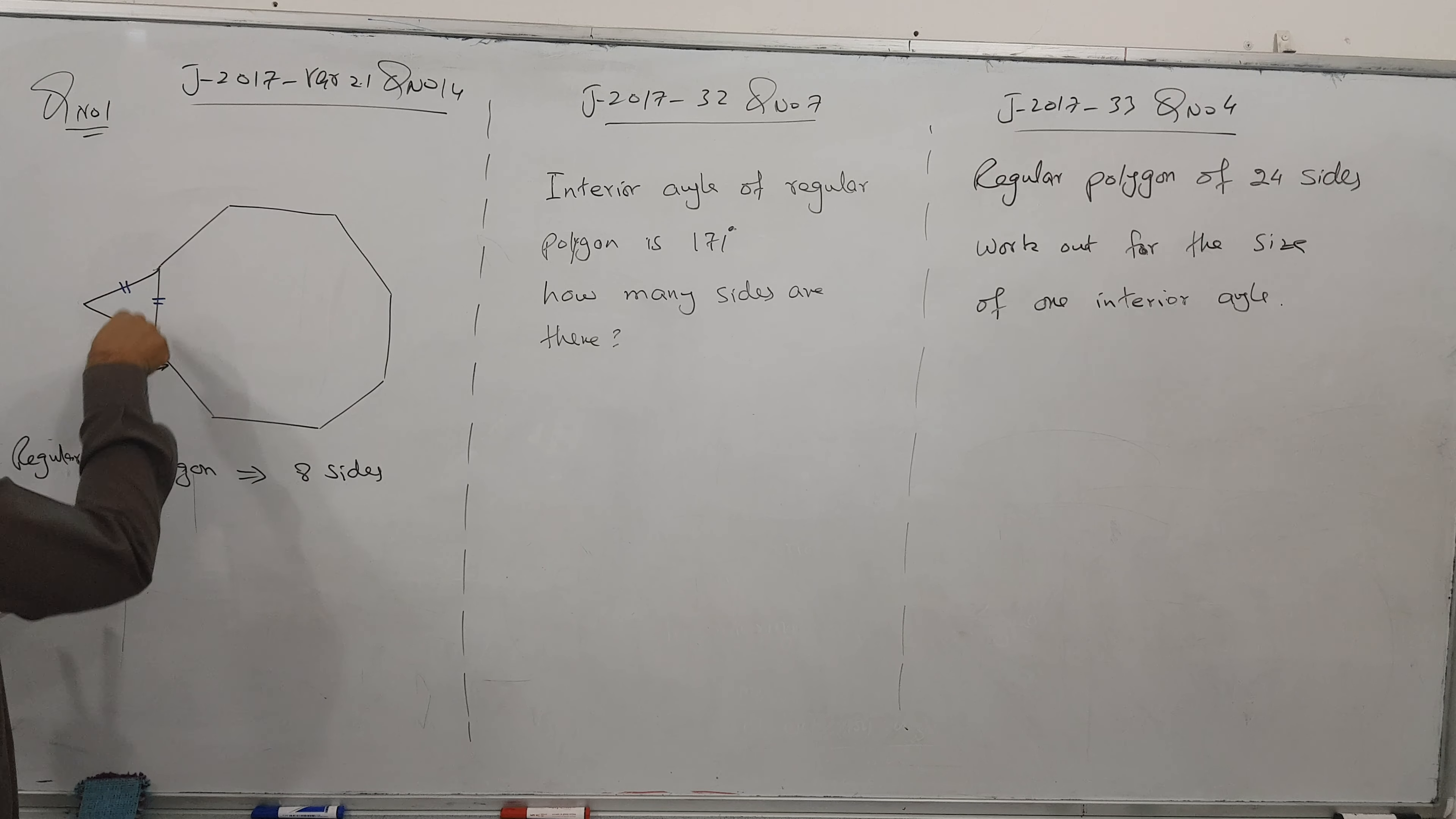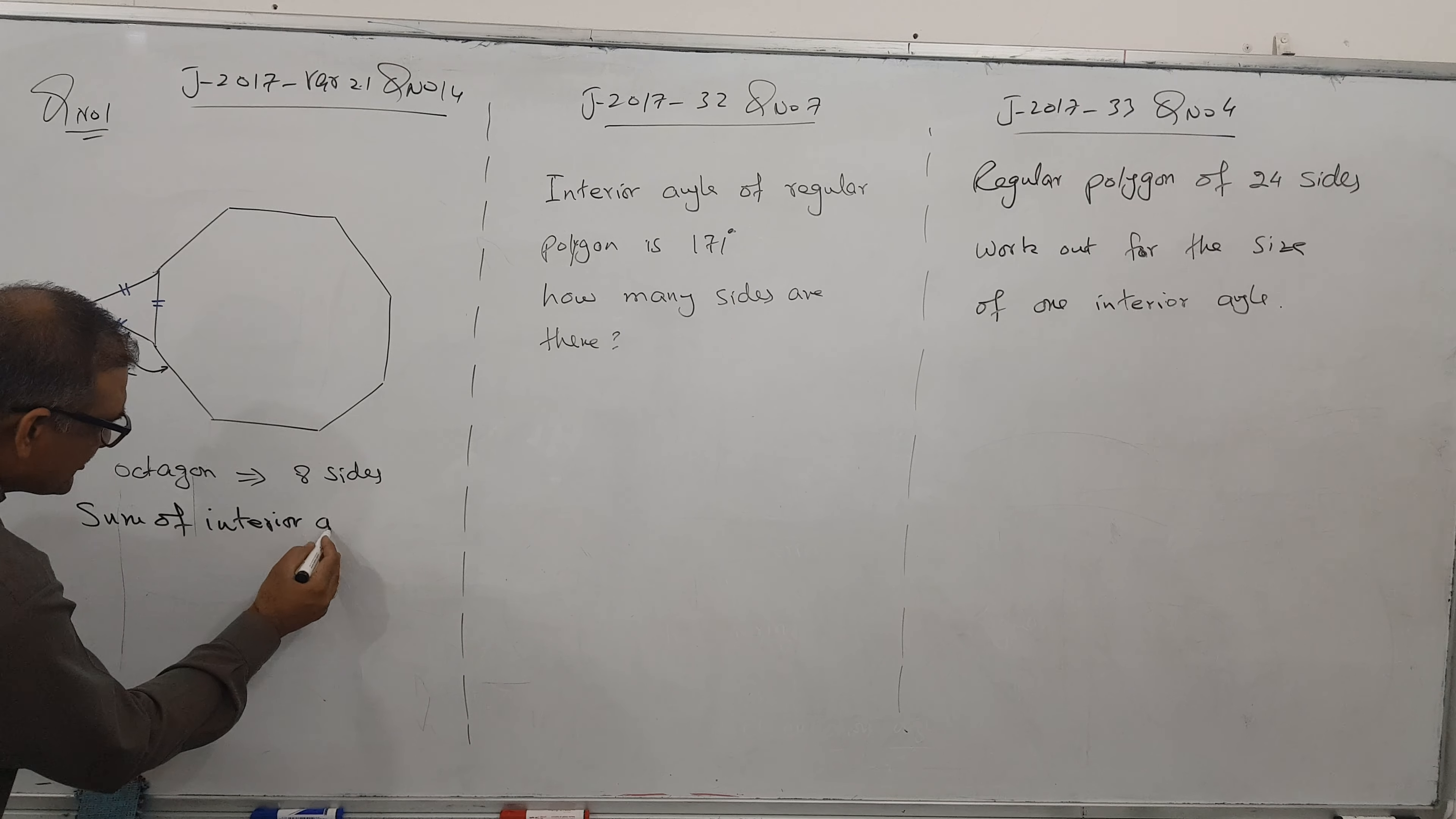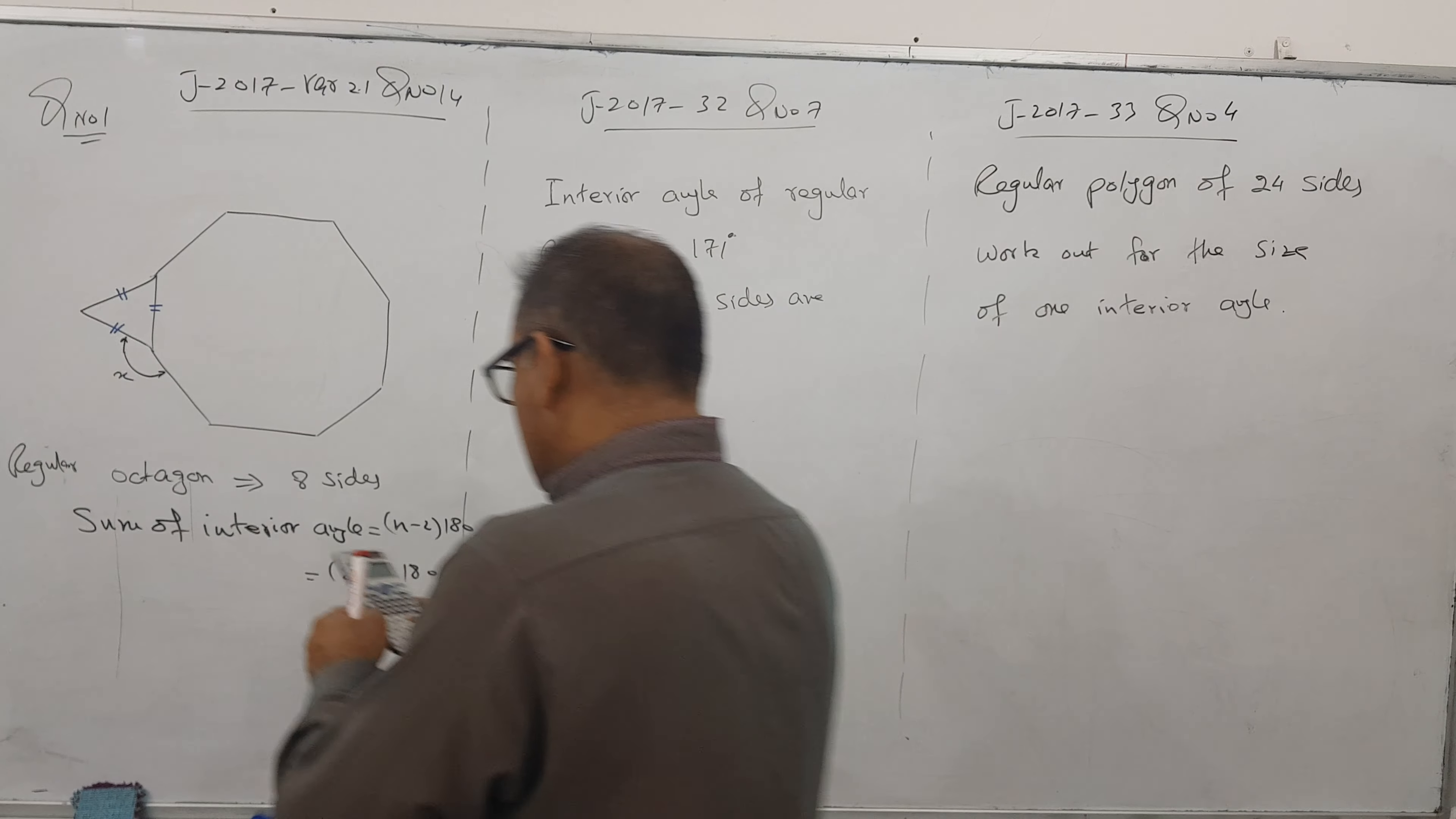How to get each angle? You know that every angle equals the interior angle. First of all, sum of interior angles is n minus 2 times 180. When I put it here, 8 minus 2 into 180. So it becomes 6 times 180.